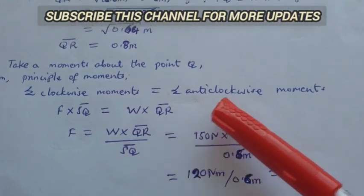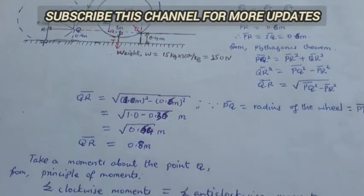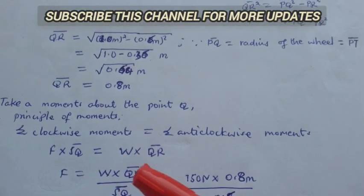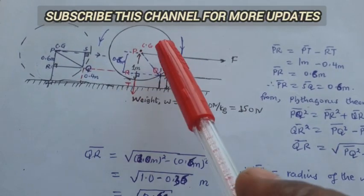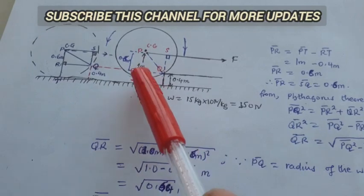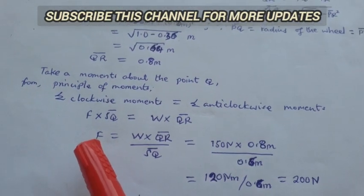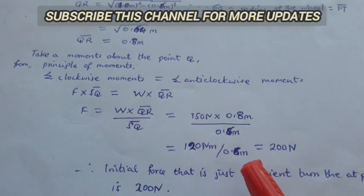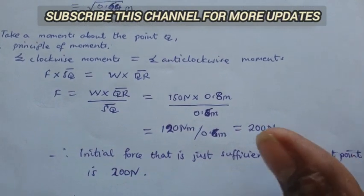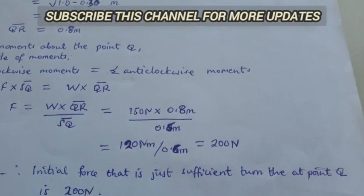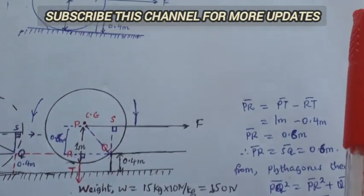And for anticlockwise moment, we have a weight that is 150 times a perpendicular distance, which is QR, which also is corresponding to SP. That's QR, we obtained from here, that is 0.80. Now we make the subject as initial force, and we get our solution as 200 newton. This is the initial force that is just sufficient to turn the wheel at the point Q.